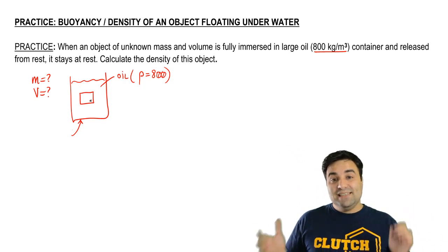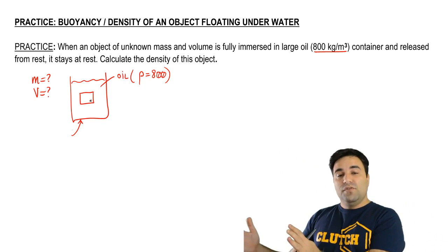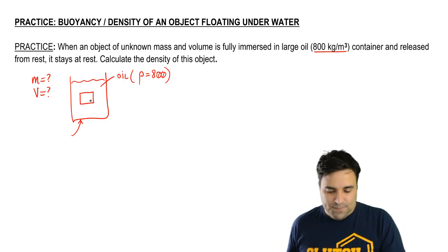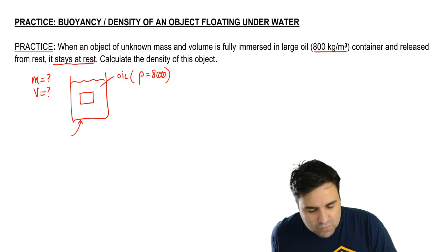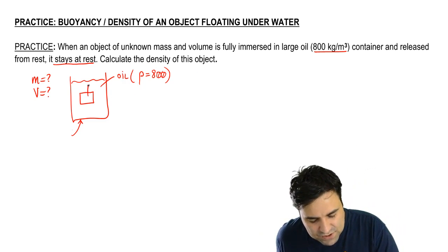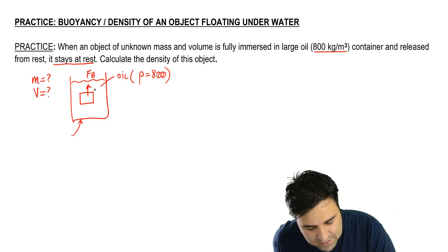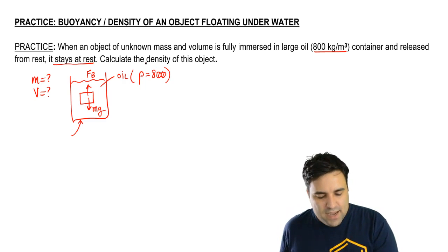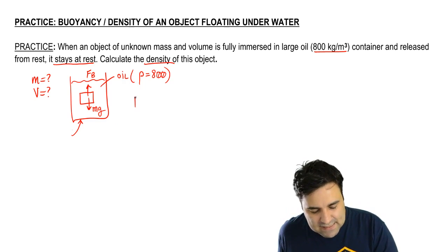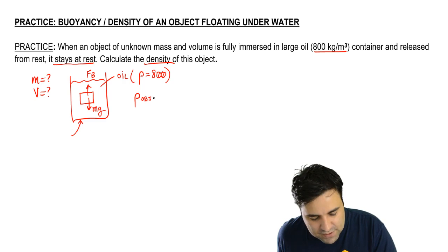And it doesn't move because it's at equilibrium. It would move if it had a net force. So if it doesn't move, it's because the forces are canceling. The FB up cancels with the MG down. And we want to know what is the density of the object, not of the liquid.